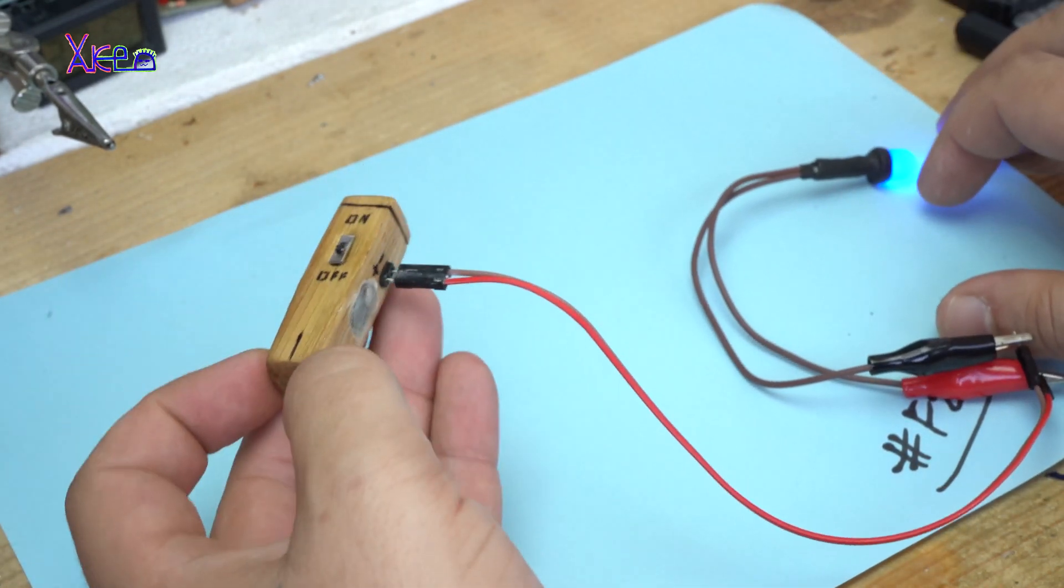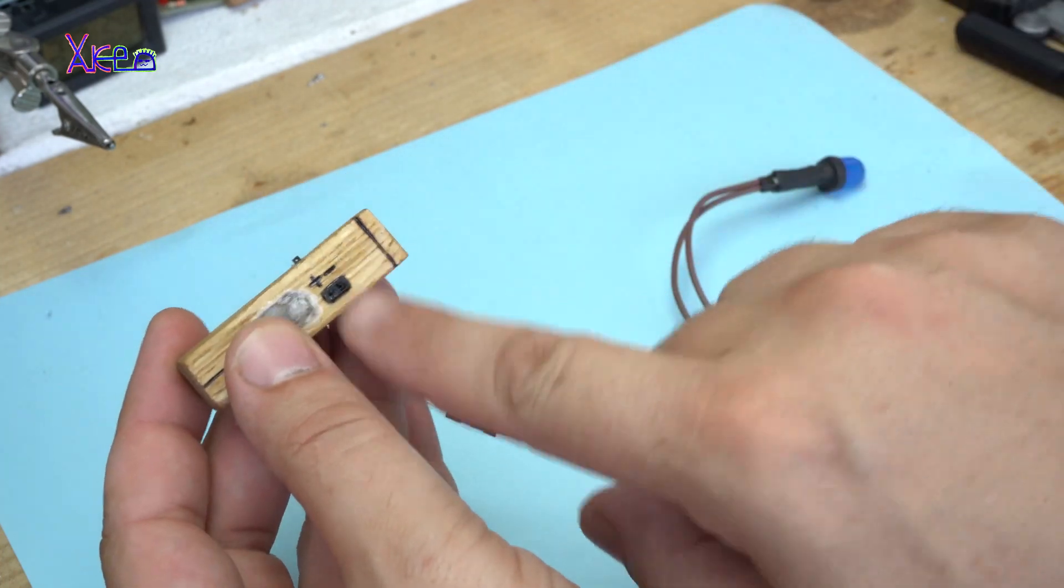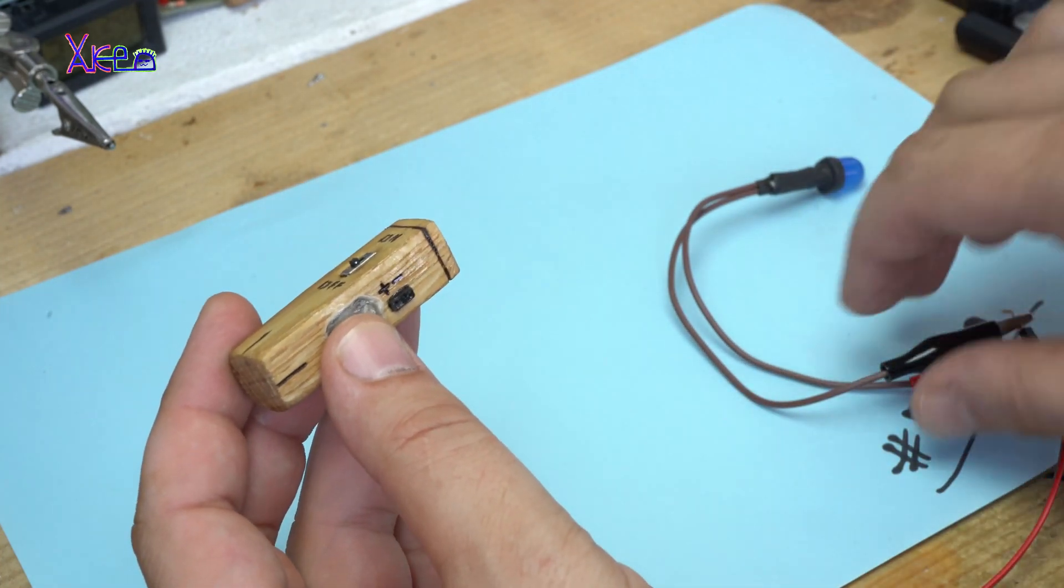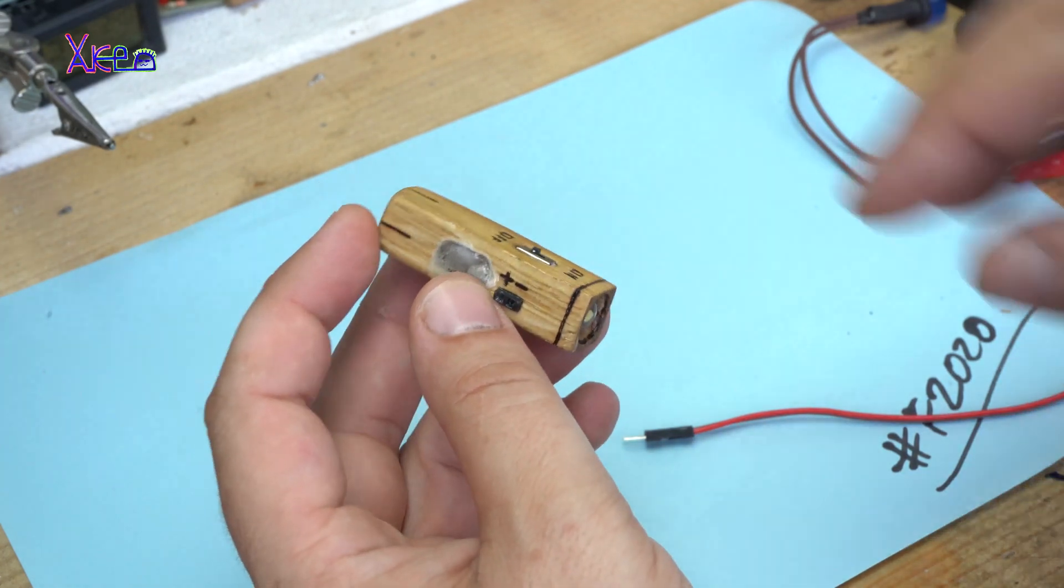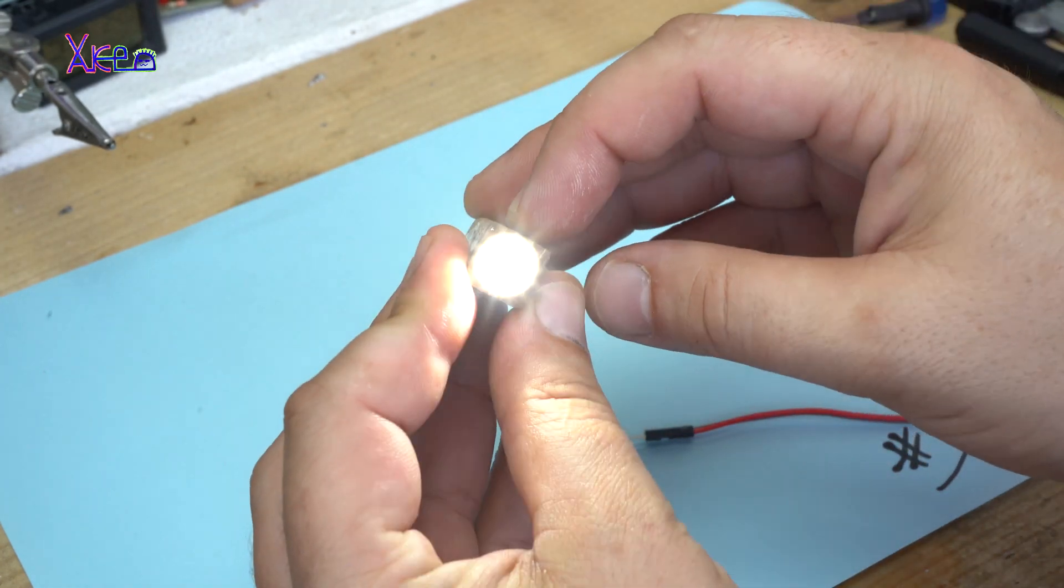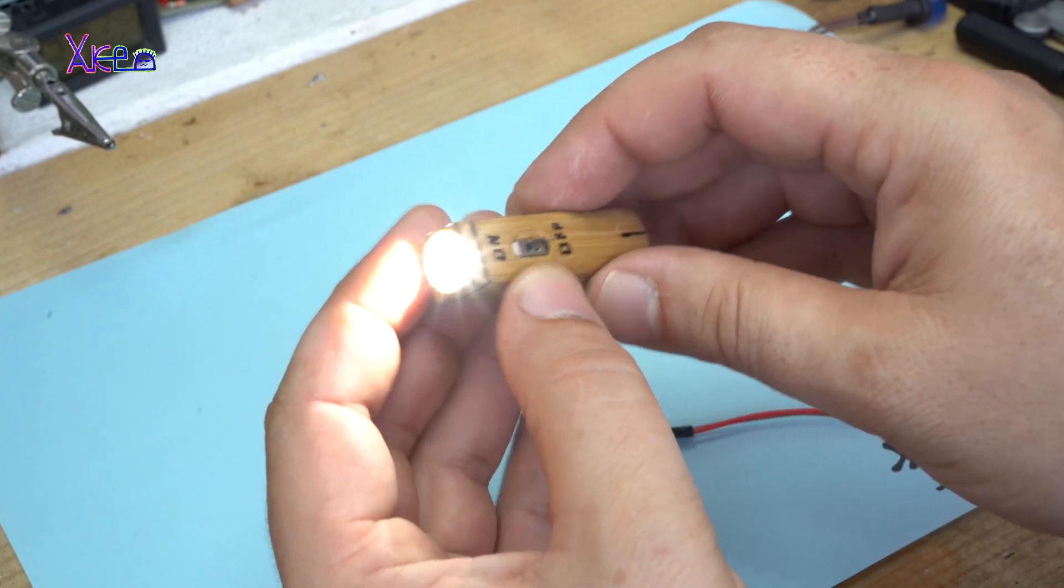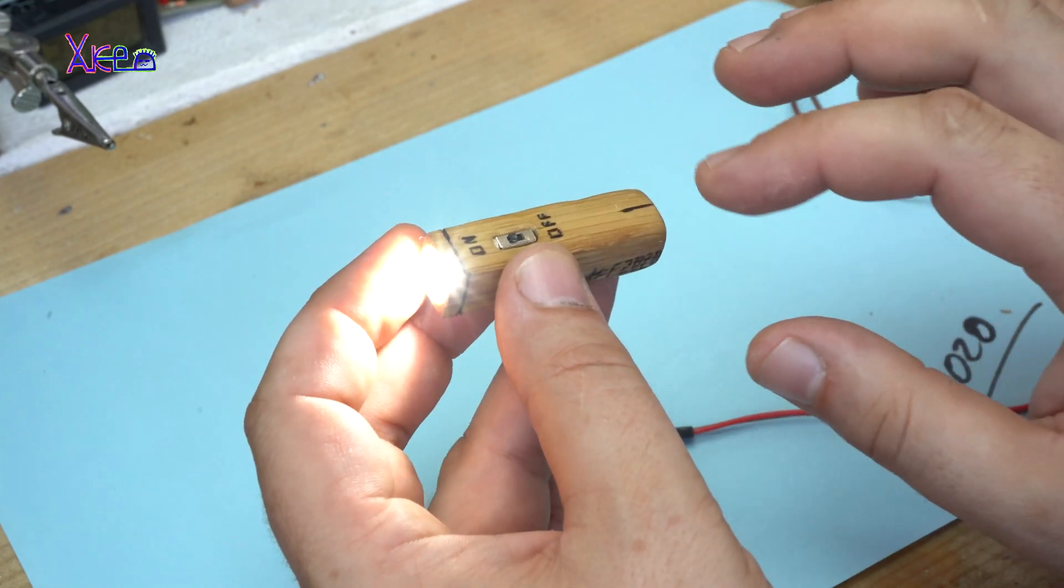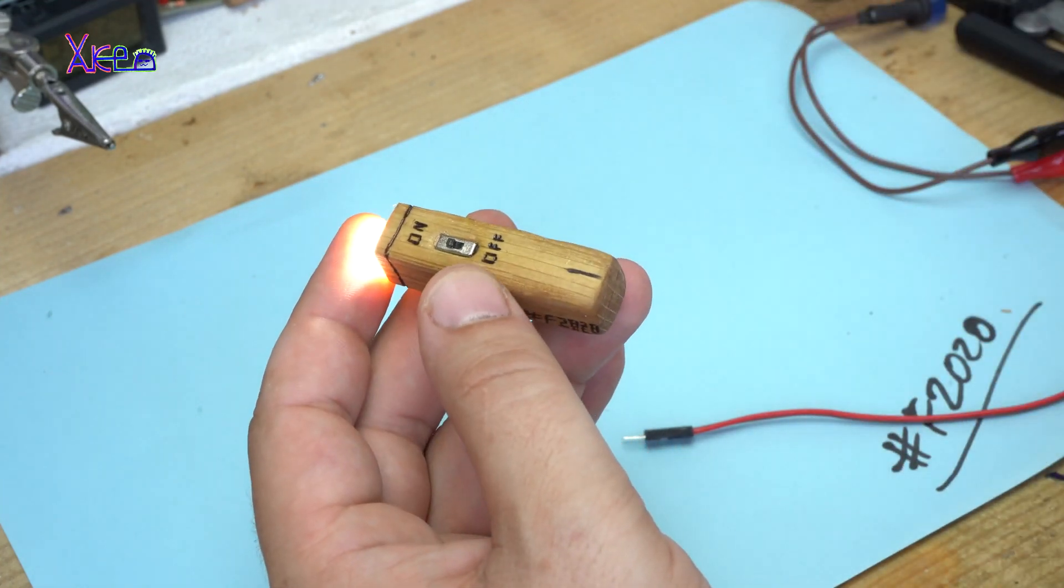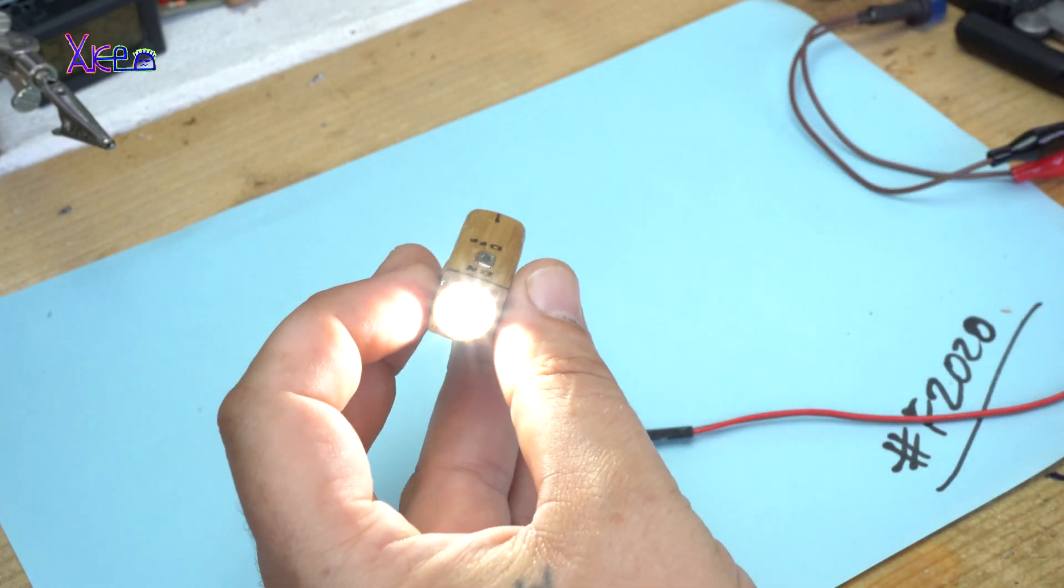Okay. I have told you that this port is for charging and giving the voltage. Let's test it. Wow. It's very bright for this kind of mini flashlight.